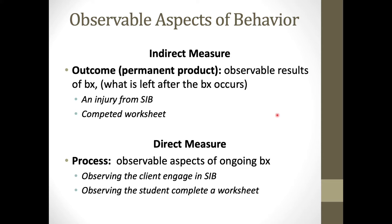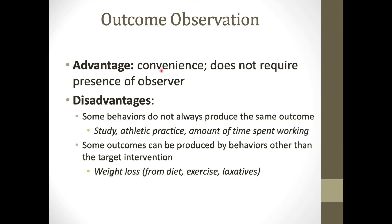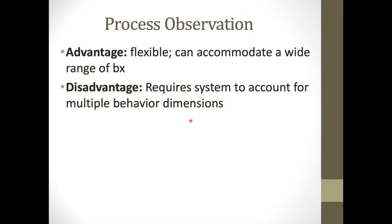If the target behavior is observable, there are permanent product measures — the outcome left after a behavior occurs. But there's also process observation: observing the behavior as it unfolds repeatedly in time. The advantage of outcome measures is they don't require you to be present; the disadvantage is that outcomes can be produced by multiple behaviors. This chapter focuses primarily on process observation.